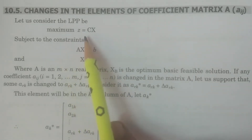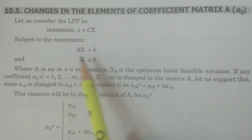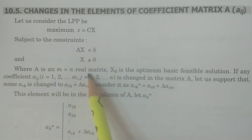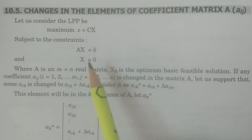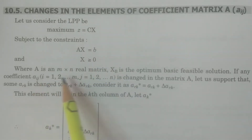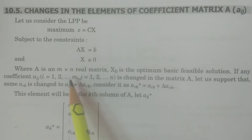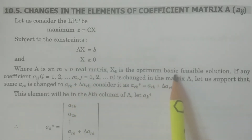Maximize z equals cx, subject to the constraint Ax equals b and x greater than or equal to zero. This is the linear programming problem to be considered, where A is an m by n real matrix. Our focus is on matrix A only. xB is an optimum solution.